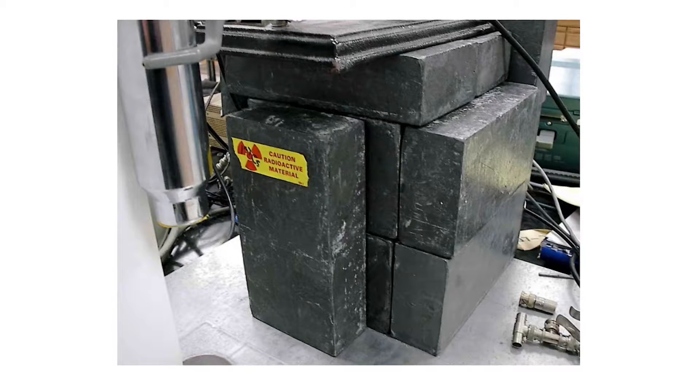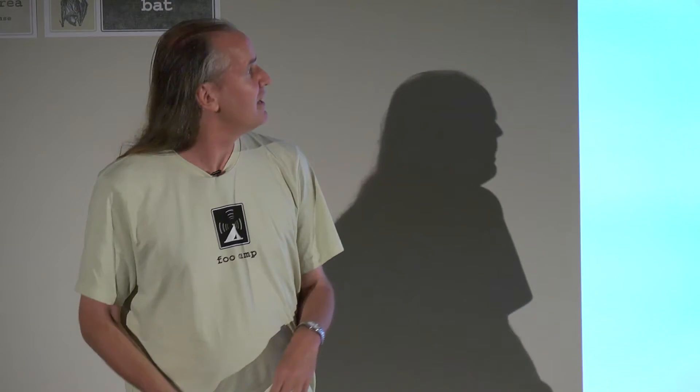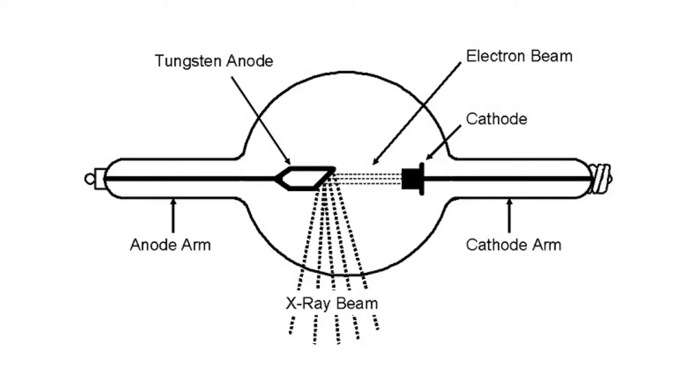Each brick in a lead castle weighs between 10 to 20 kilograms — that's 20 to 40 pounds. It's heavy, it's expensive, and it's not health and safety compliant. And in any case, it doesn't provide all the shielding you want. For example, beta particles fired into lead shielding undergo Bremsstrahlung — the same process that generates x-rays when you accelerate electrons into a tungsten anode — converting the radiation type but not eliminating it.